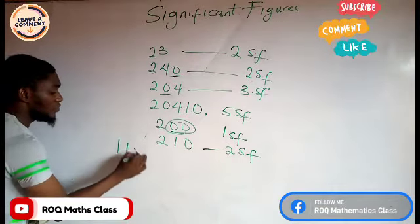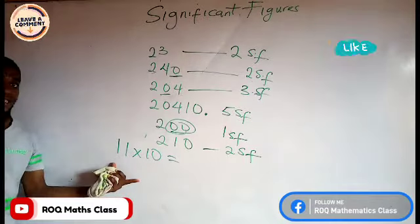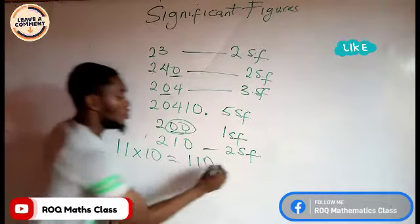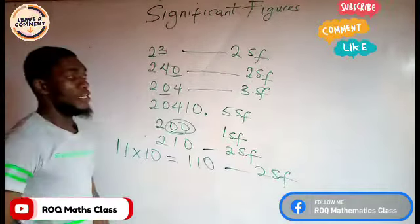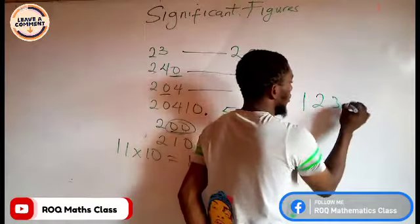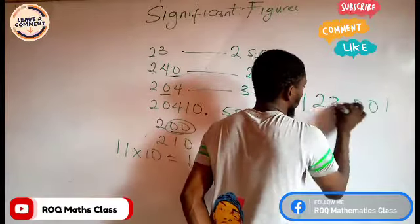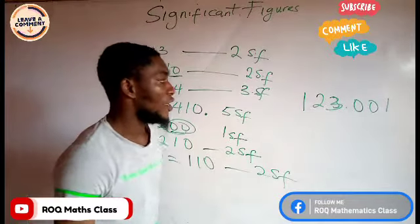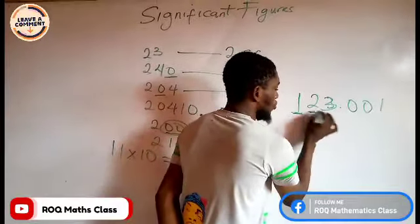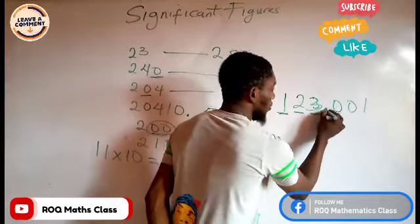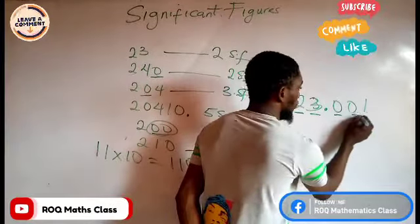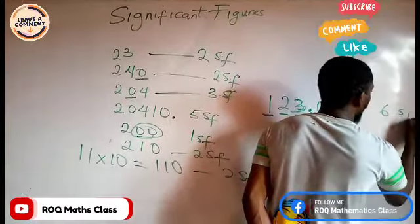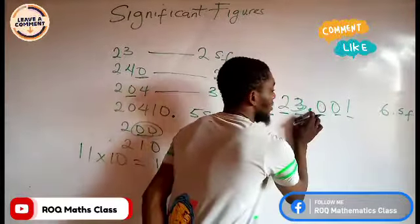We are given the number 11 times 10 — actually, 11 times 10 is the same as 110. So how many significant figures? Two significant figures. But if you are given the number 123.001, how many significant figures do you have? You have to count: one, two, three — and because of the decimal point you count all the zeros too — one, two, three, four, five, six. So you have six significant figures, because of the decimal point.